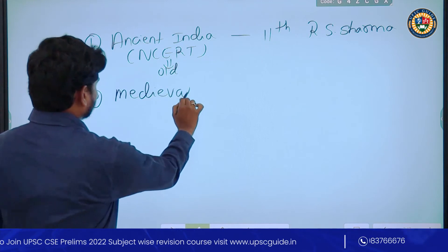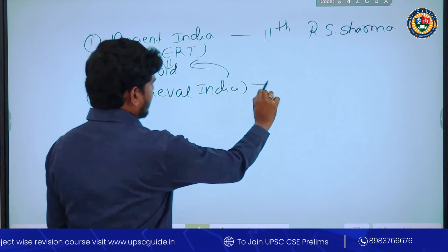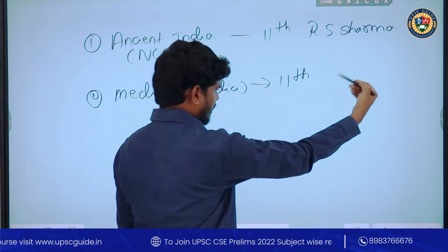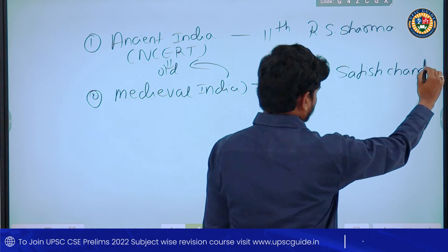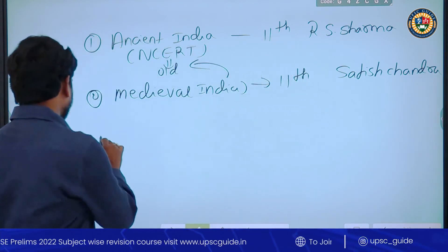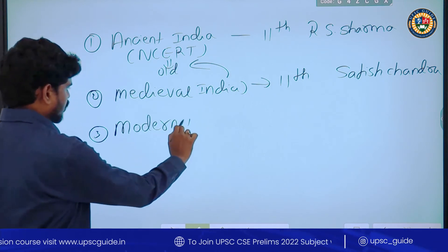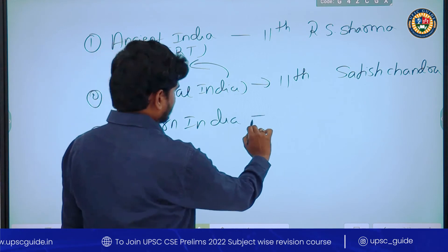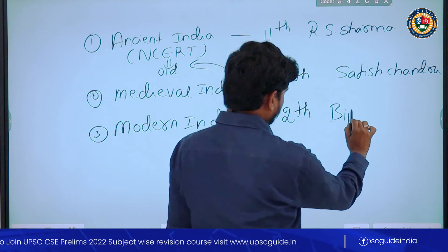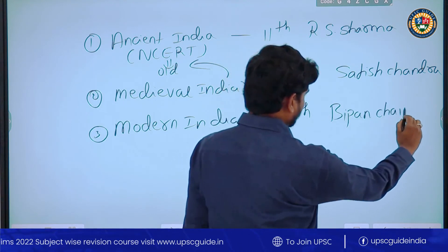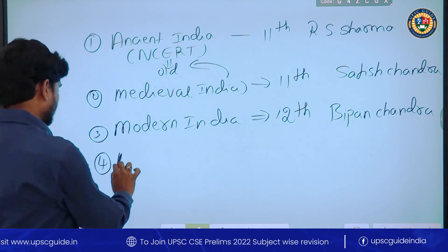Secondly, Medieval India — this is also old NCERT, 11th class, and the popular author we call is Satish Chandra. Thirdly, Modern India — this is also old NCERT, but 12th standard, and the popular author we call is Bipin Chandra.